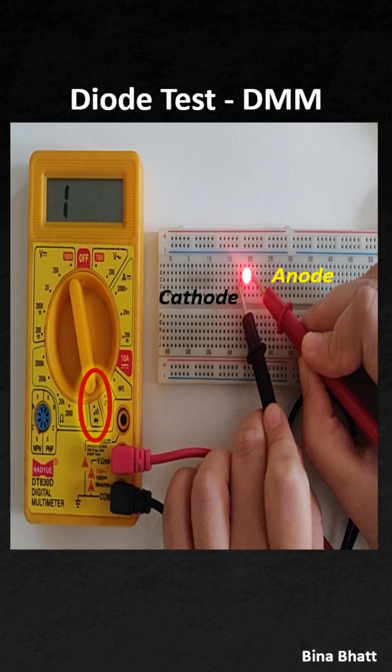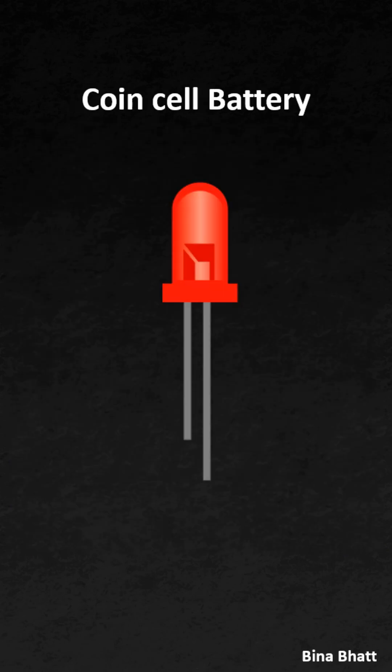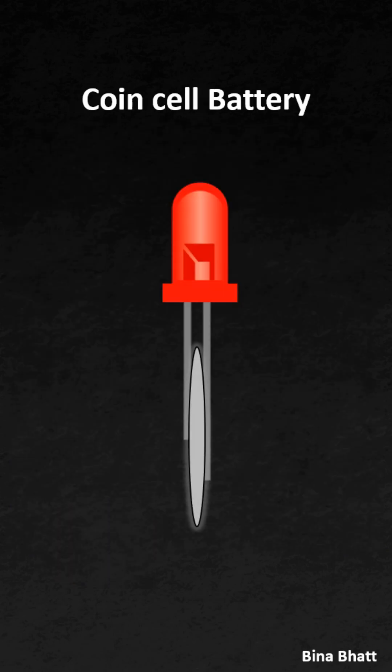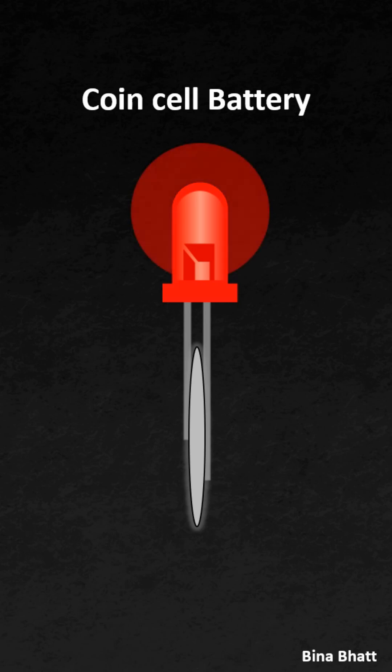If the LED does not light up, then swap the position of the probes. There is yet another way to figure out which end is which: take a coin cell battery and connect it in between the two leads of the LED.